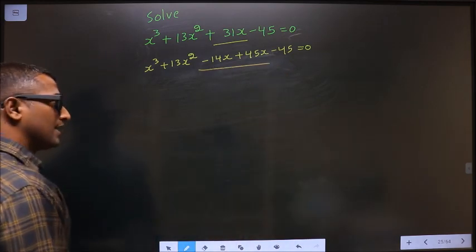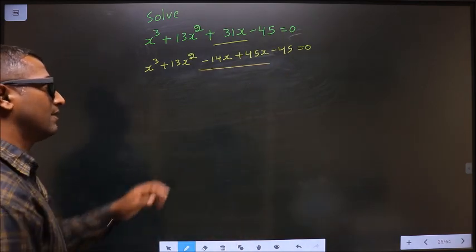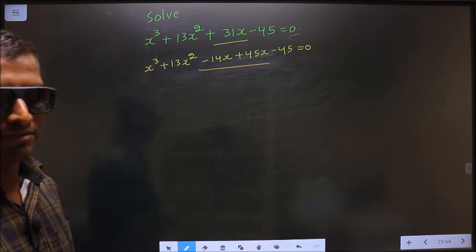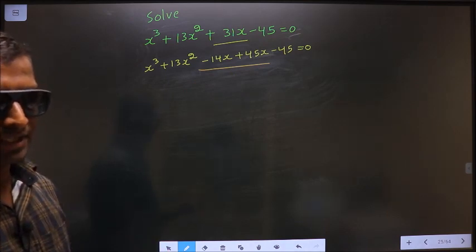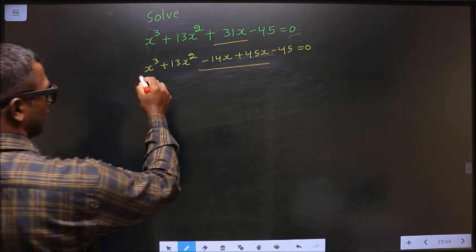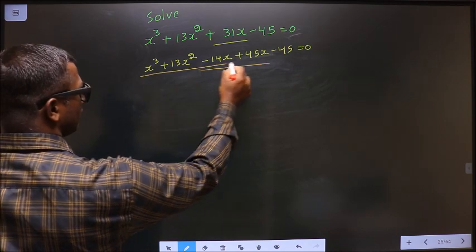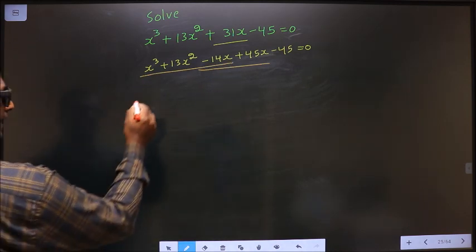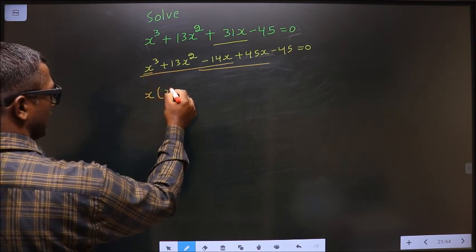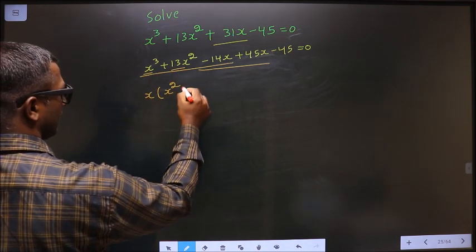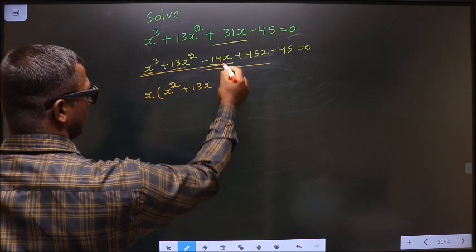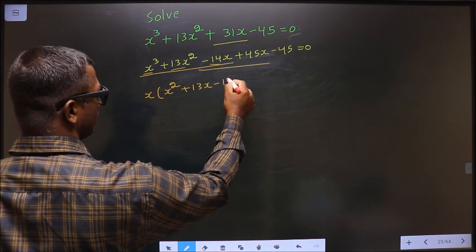In place of plus 31x, I have written minus 14x plus 45x. Next step: from these three terms, what can be taken out common is x. So here I get x square, here I get 13x, and here I get 14.